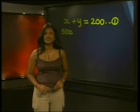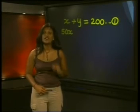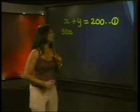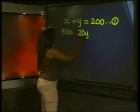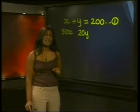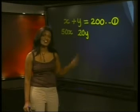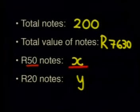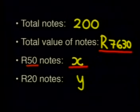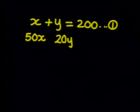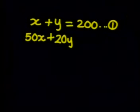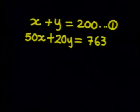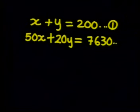For the value of all the 20 Rand notes, we multiply the number of notes by the value. So we have Y times 20 or 20Y. Can you write an equation using 50X and 20Y? That's not difficult, since we know that the total amount of money is 7,630. So we can write this equation as 50X plus 20Y is equal to 7,630. And we'll call this equation 2.